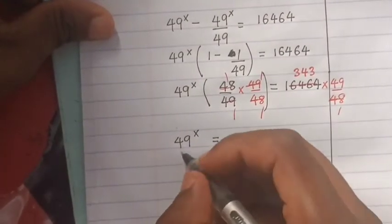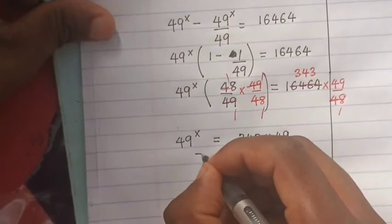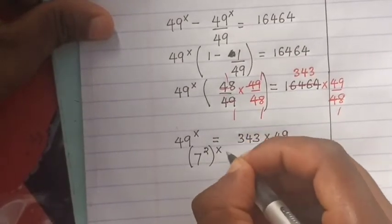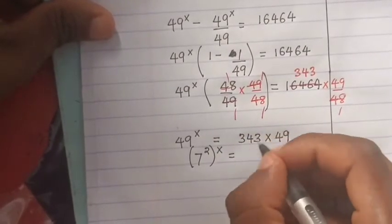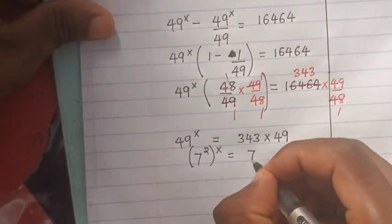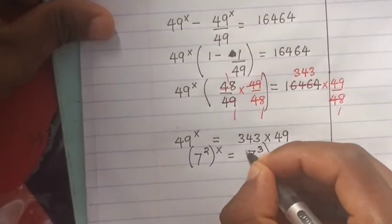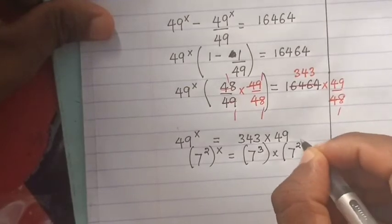This is the same as 49^x equals 7^3 times 7^2.